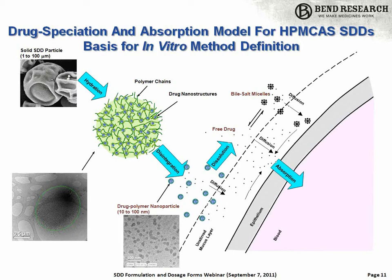These colloidal species continue to rapidly resupply the free drug as the free drug and bile salt micelles diffuse across the mucous boundary layer — the free drug being the species absorbed into the bloodstream. All these other species provide a higher total solubilization and rapidly source free drug as it's absorbed. That's the model for performance and the speciation of the different drug-containing moieties present. When we do in vitro dissolution testing, we're always trying to understand the distribution of these different drug-containing species and how they affect performance.